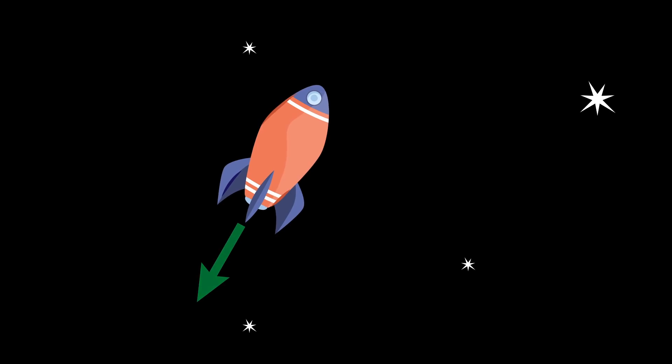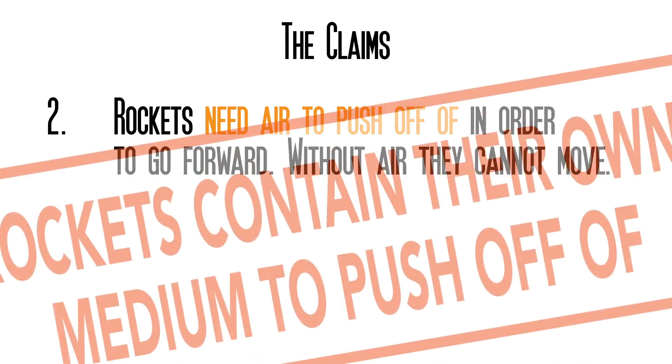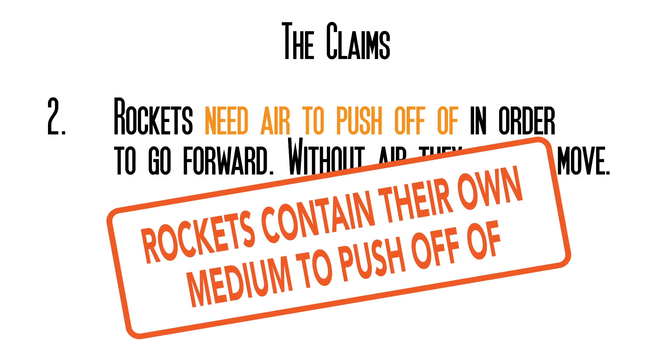But rockets in space aren't in a medium like air or water, and thus have nothing to push off of, is the claim. And again, the answer is, rockets contain their own medium to push on, in the form of the fuel they combust.